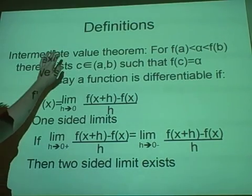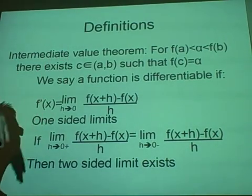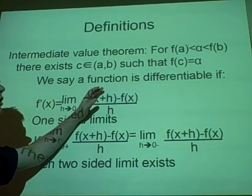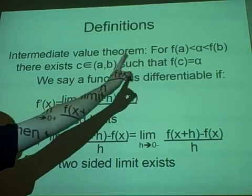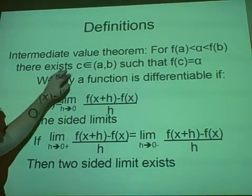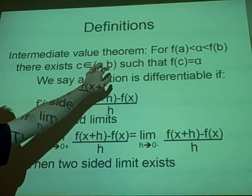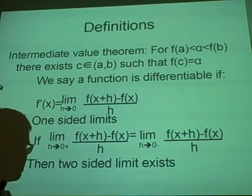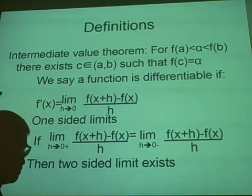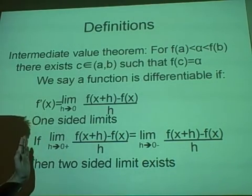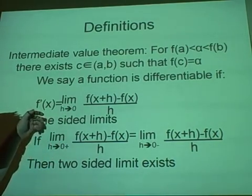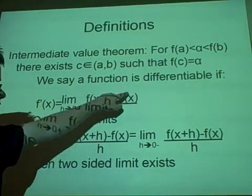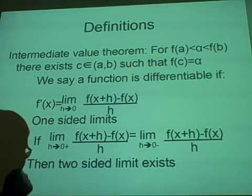Right, definitions as always. This is very important for differentiation: the Intermediate Value Theorem, which states that for a function, for f(a) < α < f(b), there exists a c as an element of (a,b) such that f(c) = α. So what this is basically saying is, if you've got a graph, then there will be a value, if there's a value between the two points, then you'll find another value which fits there, which is perfectly usable.